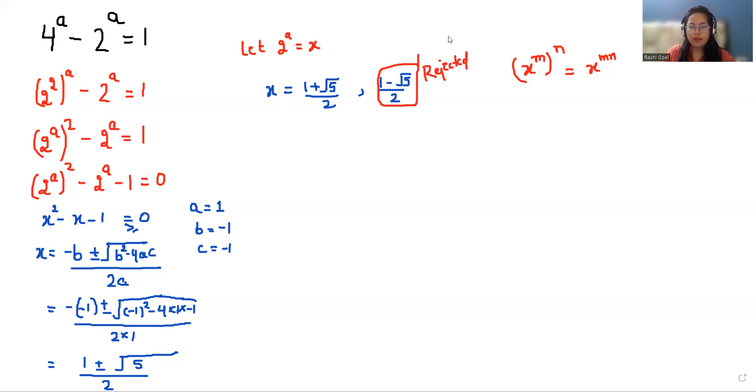As we know, we took 2^a = x, so we substitute the value back. So 2^a = (1 + √5)/2.